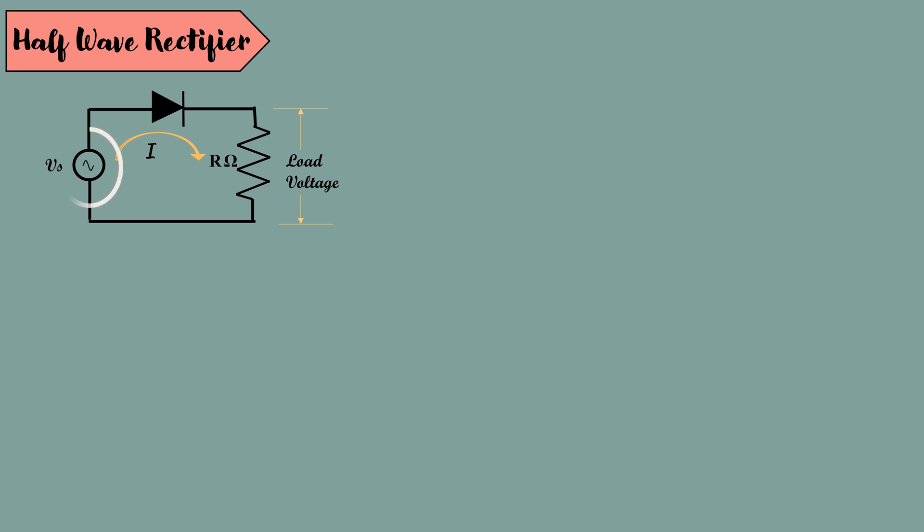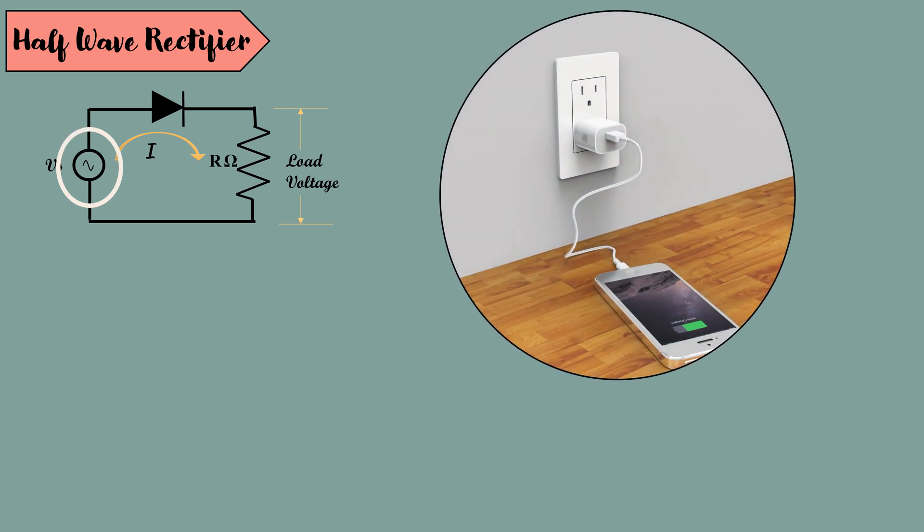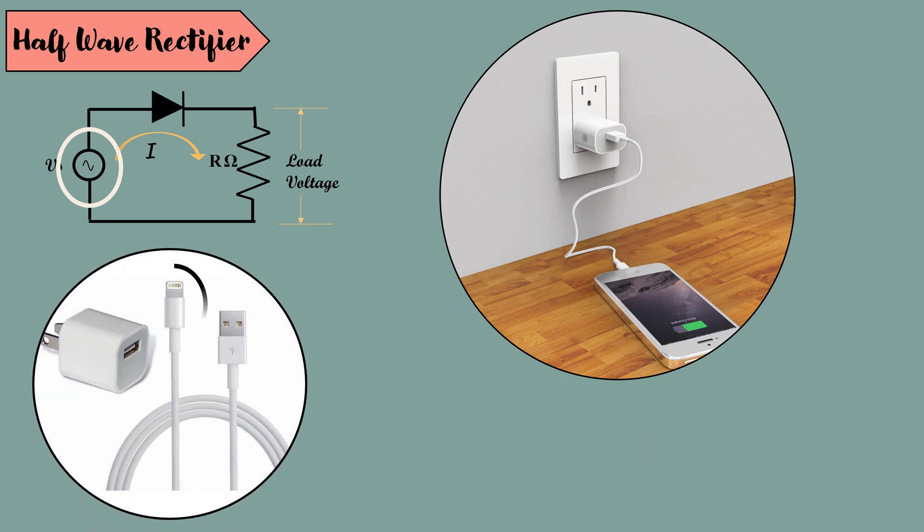First, let's see about this source. If we consider this mobile charging application, we need a DC supply to charge a battery. But the supply we have in our household is AC. So, rectifier circuit is present in our mobile chargers, which will convert our household AC supply to DC supply.